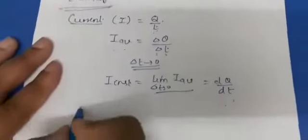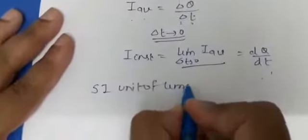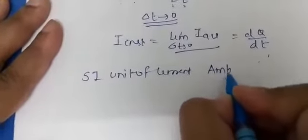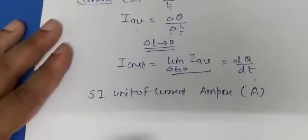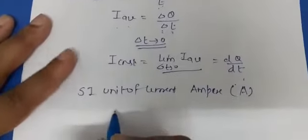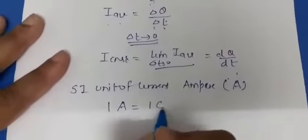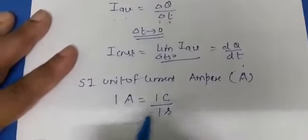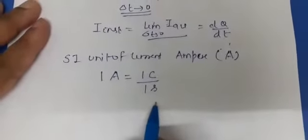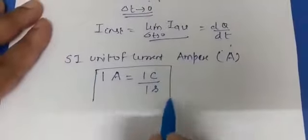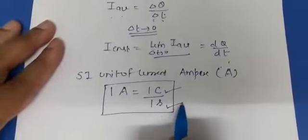The SI unit of current is ampere, represented by symbol A. If you have to define the SI unit, current is said to be 1 ampere when 1 coulomb charge flows for 1 second.